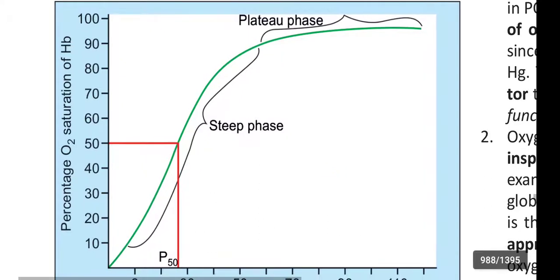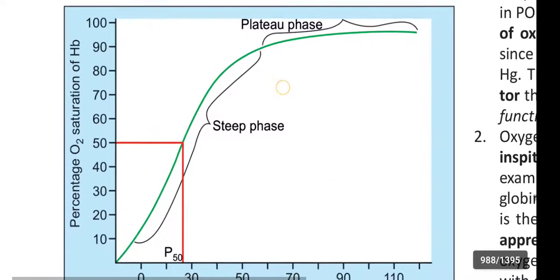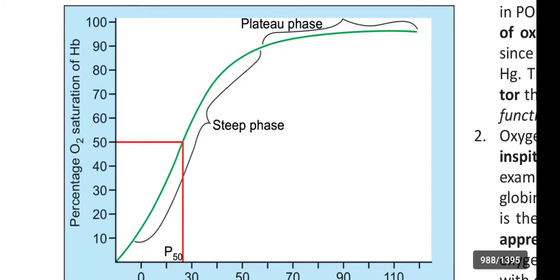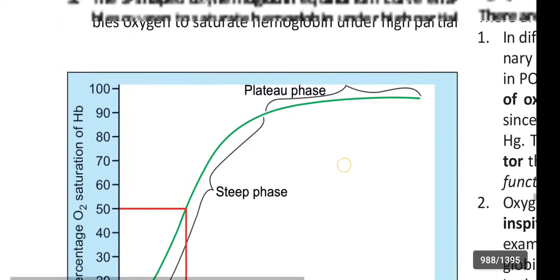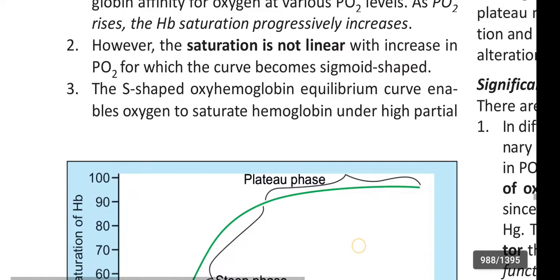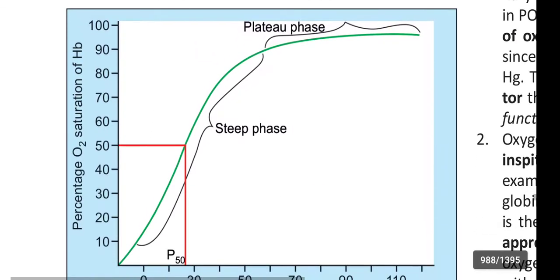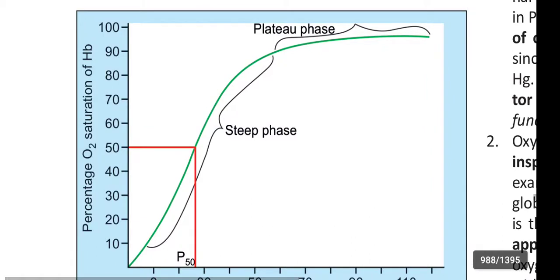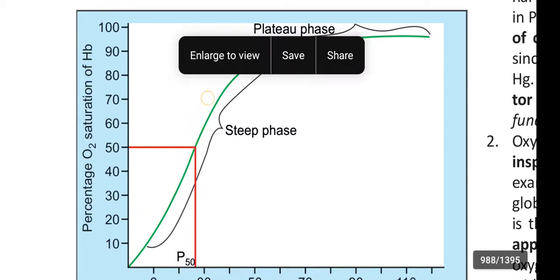This is the Oxyhemoglobin Dissociation curve. It is a sigmoid curve. With increase in partial pressure of oxygen, hemoglobin saturation becomes high.